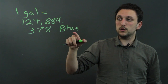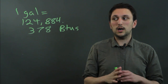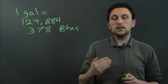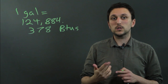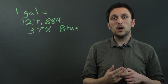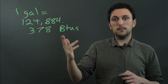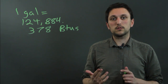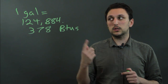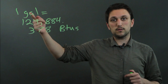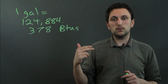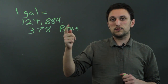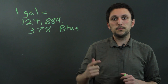A British Thermal Unit — just because it's called British doesn't mean the British actually use it anymore. Mostly it's the Americans who use it, just like gallons. In the metric system, people use liters for volume and joules for heat energy instead of BTUs.